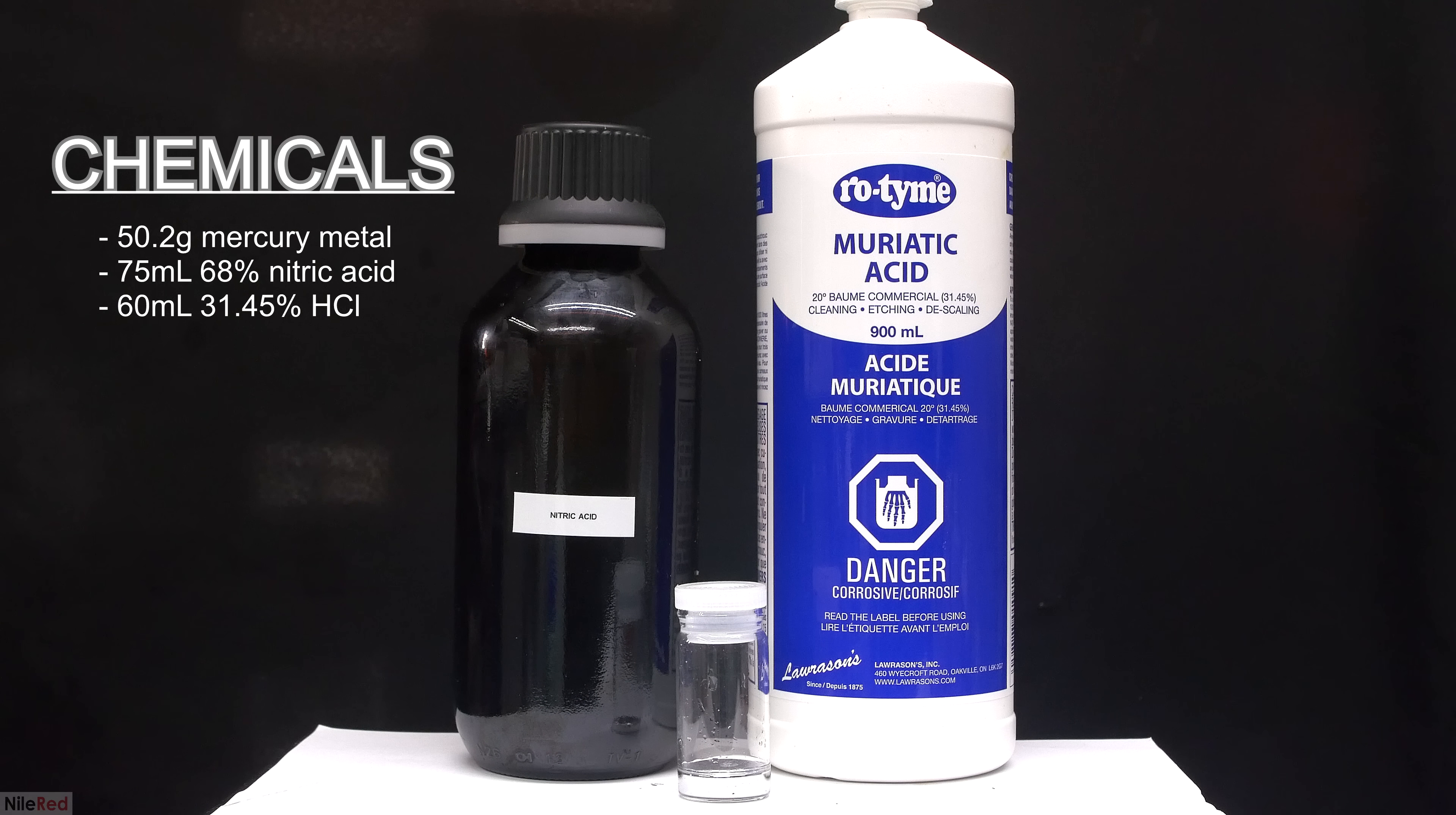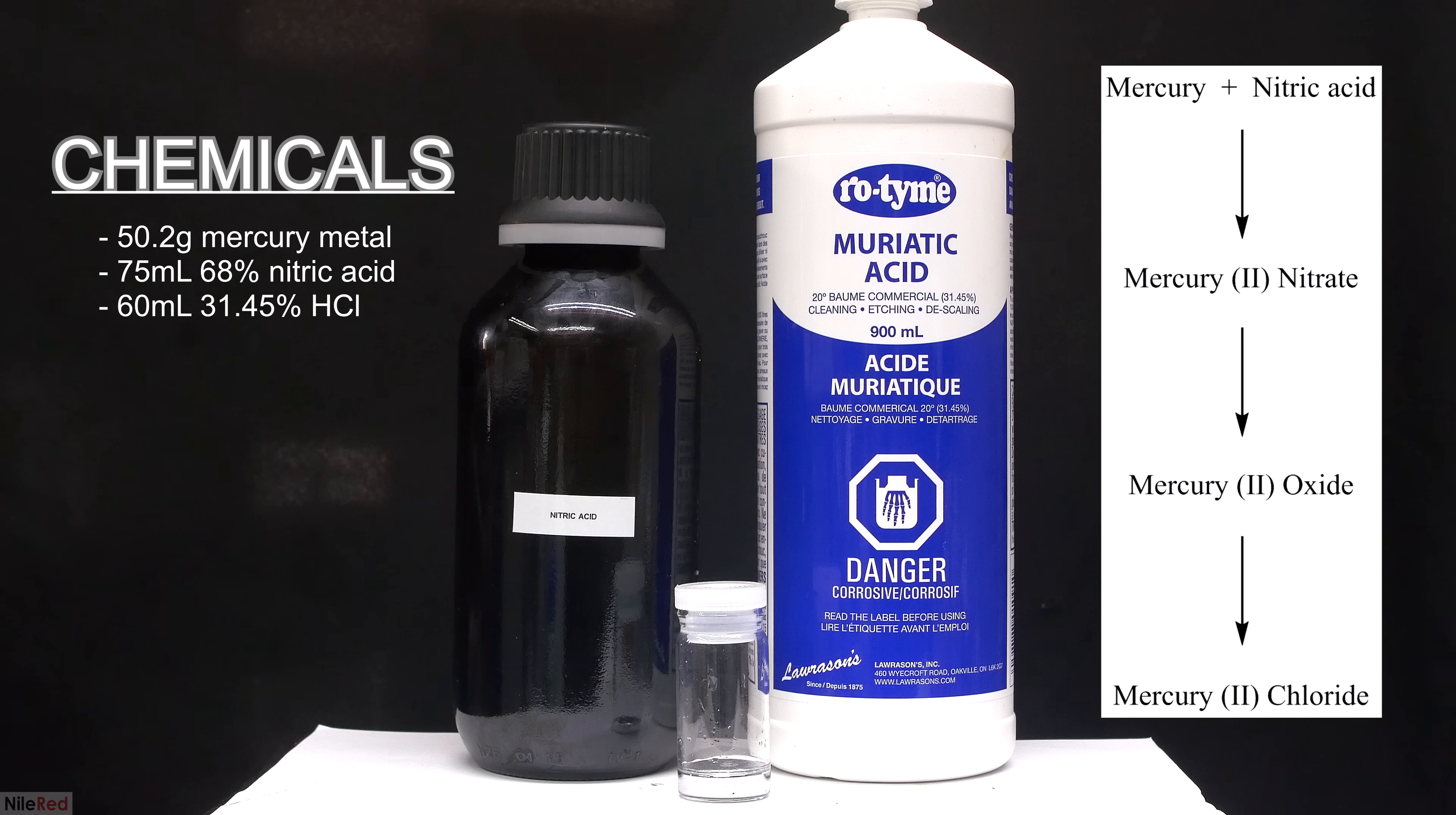To make mercuric chloride, we need three main things: elemental mercury, nitric acid, and hydrochloric acid. The general procedure for this video is to first make mercury(II) nitrate by reacting the metallic mercury with the concentrated nitric acid.